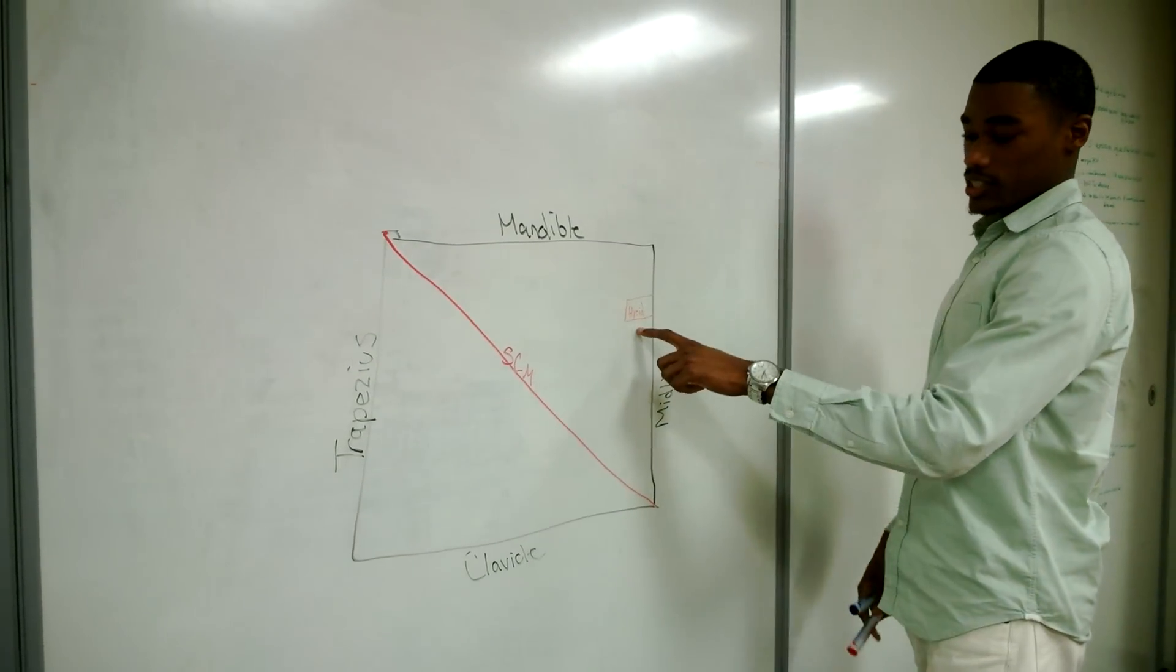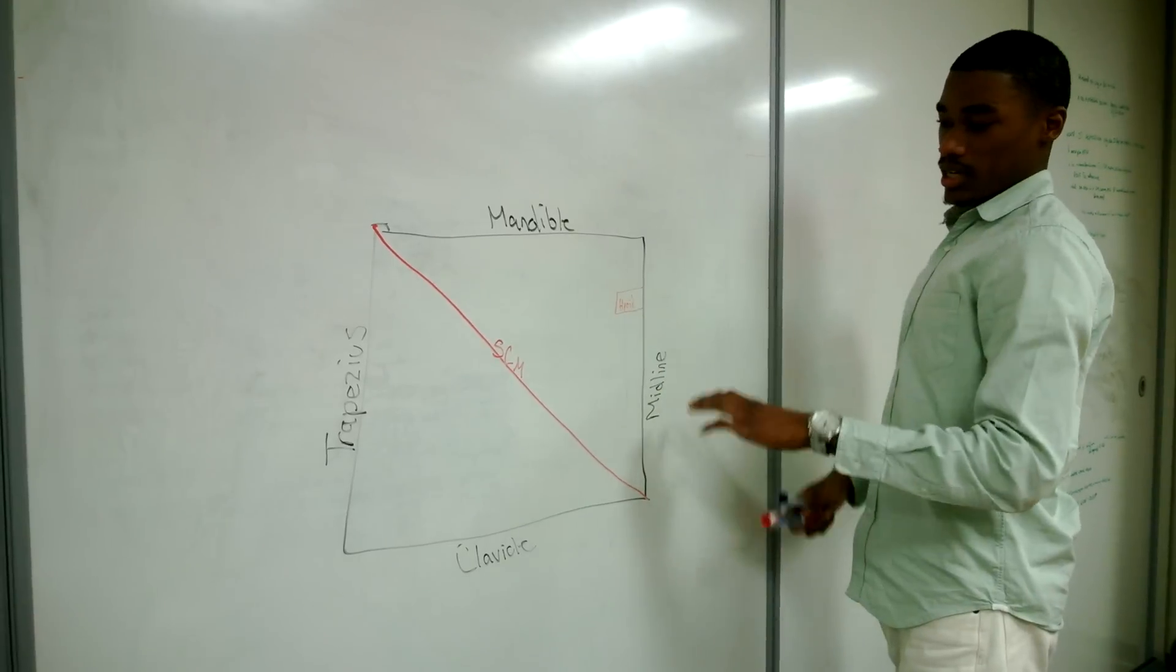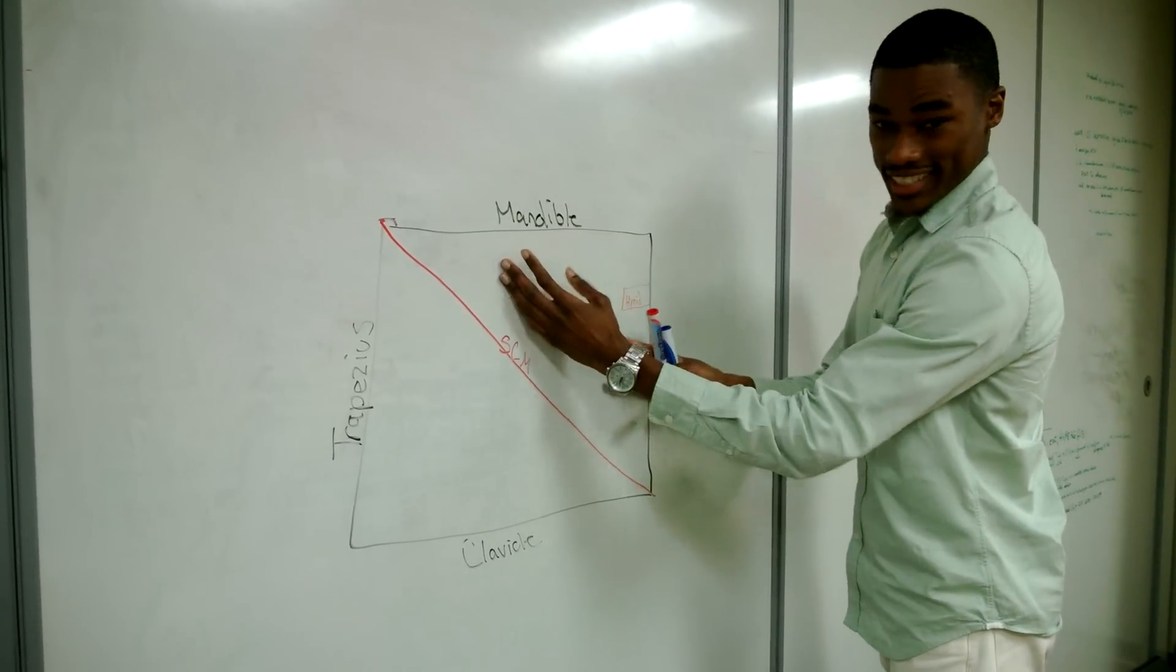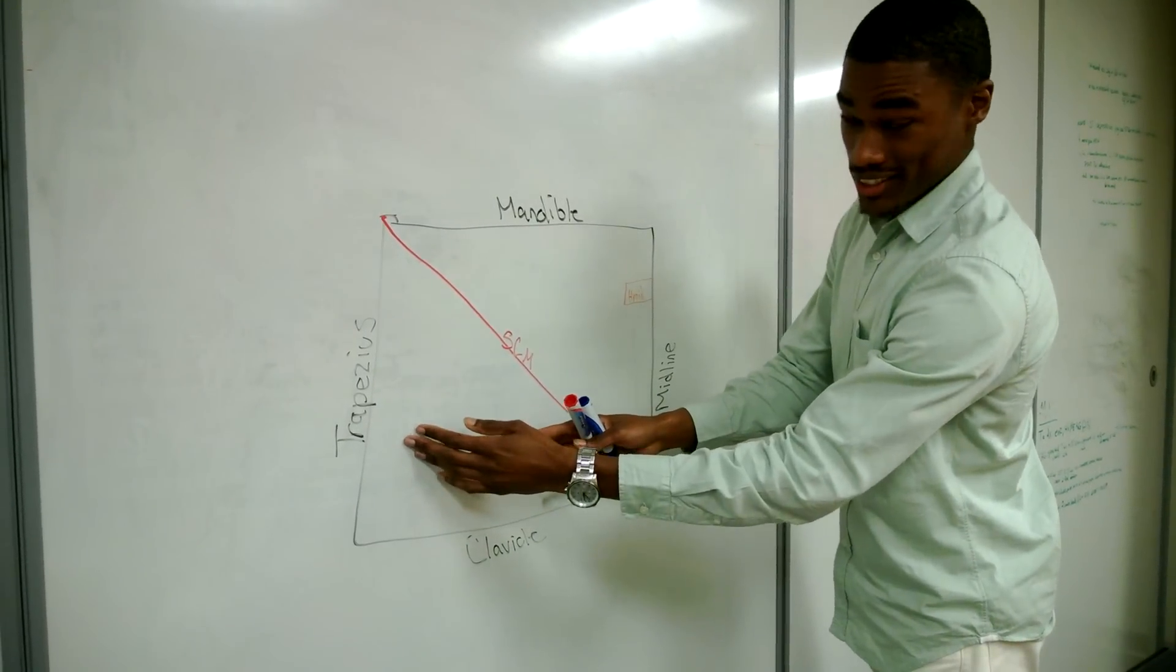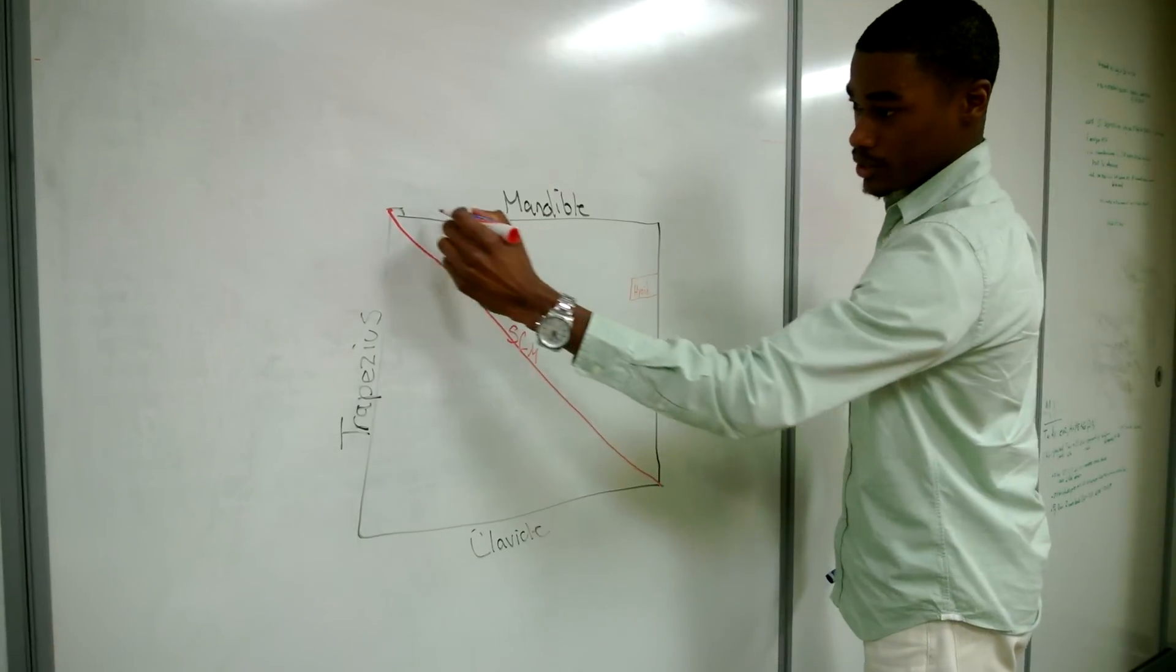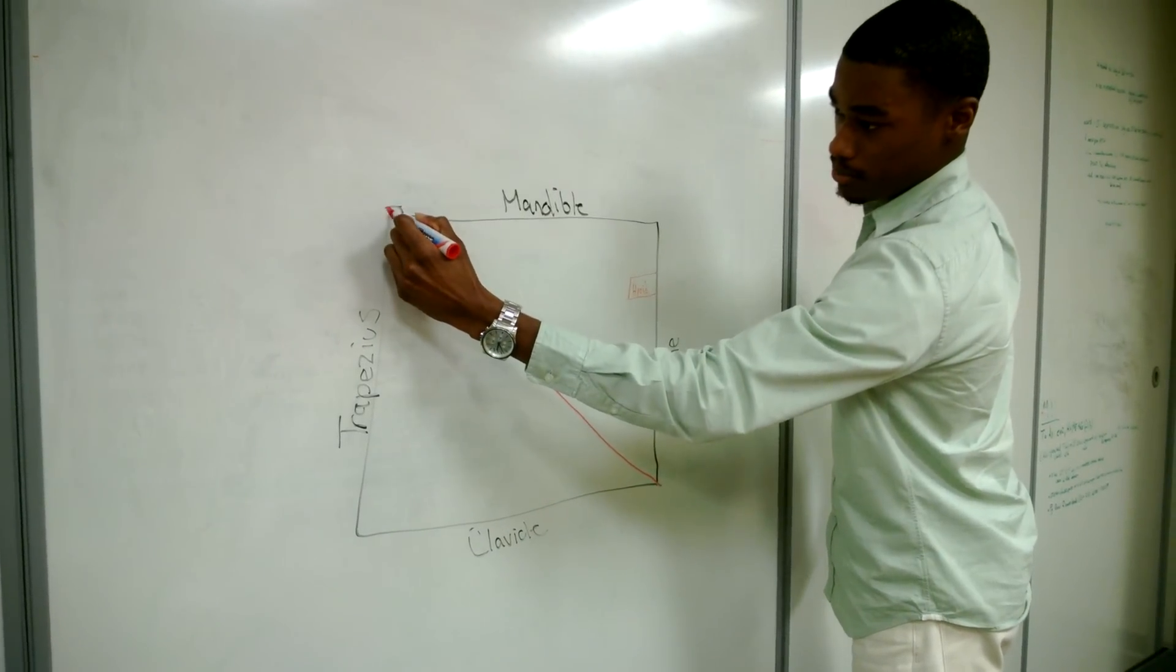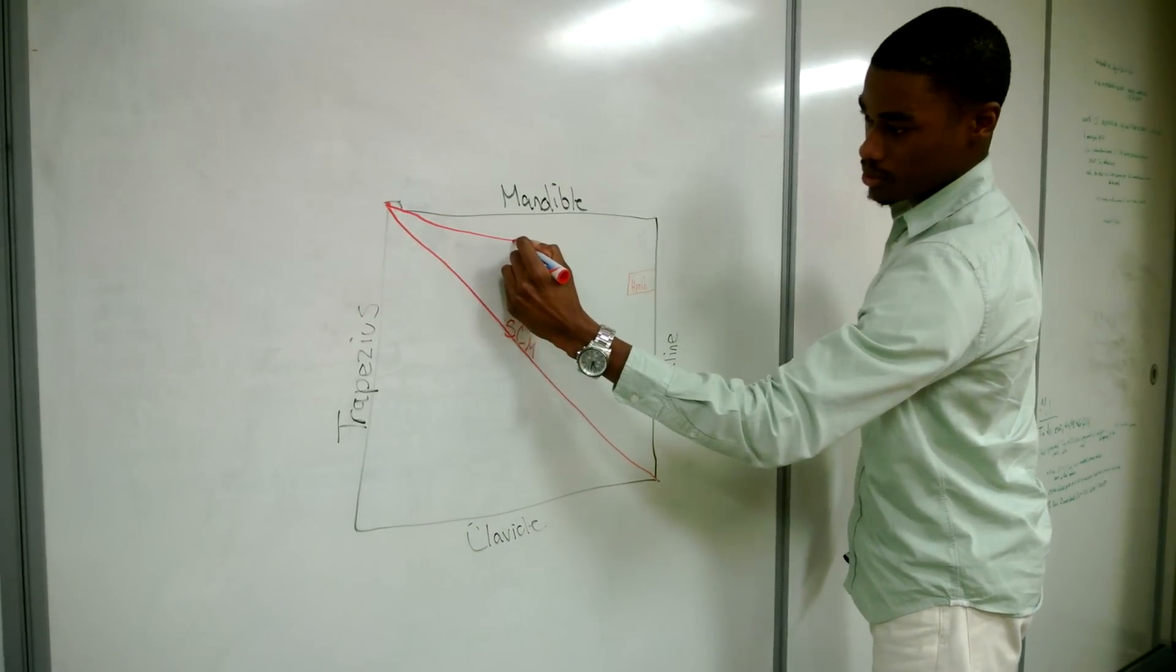So next to your hyoid bone. Before we begin, this is the anterior triangle. This is the posterior triangle. So I continue on. Your hyoid bone, you're going to have the posterior belly of the digastric coming from the mastoid process.